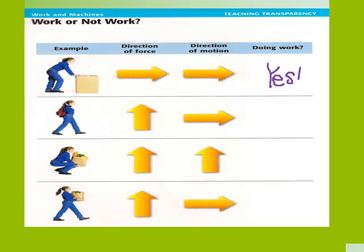In the second picture, she's lifting up her backpack from the ground. The direction of the force is upward, but the direction of motion is to the right because she's walking to the right with the backpack — so she is not doing work. In the third picture, she's bending down and lifting up a bag of groceries. The direction of force is upward and the direction of motion is also upward, so yes, she is doing work. Finally, after she picks up the bag of groceries and walks across the room with it, she's not doing work because her direction of force is upward but her direction of motion is to the right — they're not in the same direction, so it's not work in the scientific sense.